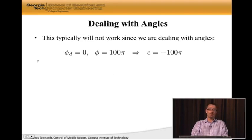No, it won't, and I will now tell you why. In this case, we're dealing with angles, and angles are rather peculiar beasts. Let's say that φ_d = 0 radians and my actual heading right now φ = 100π radians. Then the error e = -100π radians, which means this is a really large error, so ω is going to be ginormous. But that doesn't seem right because 100π radians is the same as zero radians. So the error should actually be zero.